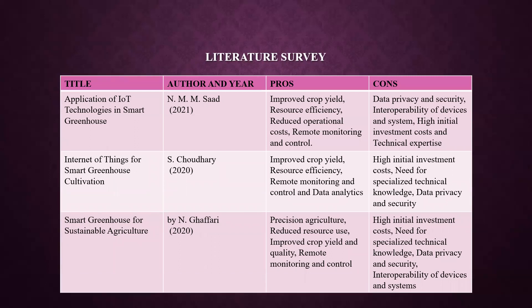First, the pros. Improved crop yields: IoT-based systems can optimize growth conditions for plants, resulting in better yields and quality. Resource efficiency: they can help reduce water and energy usage through precise control and monitoring of environmental conditions. Remote monitoring and control: allows farmers and greenhouse managers to remotely monitor and control the greenhouse environment, reducing the need for physical presence.